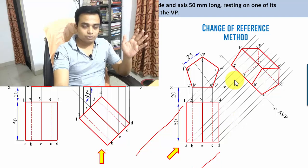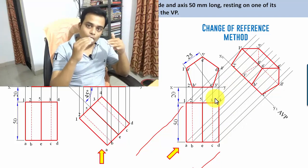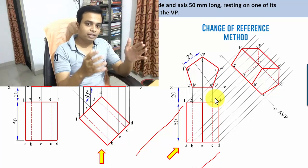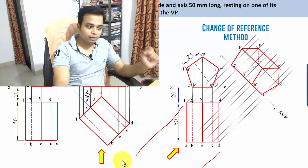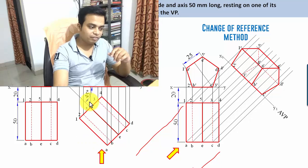That's the change of reference method — no change of position took place; rather, the auxiliary vertical plane was kept at an angle of 45 degrees with the axis. In the change of position method, no change of plane took place — what took place was the change of position of the object to make 45 degrees with the vertical plane. If you have any doubts, write them in the comment section below. If this video has added value to your knowledge of engineering drawing, share, like, subscribe, and press the bell icon for notifications. Keep learning and keep drawing!